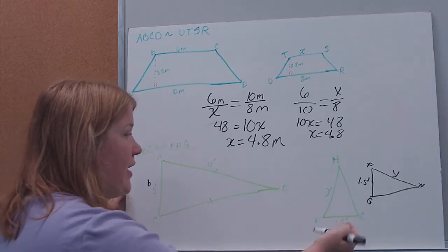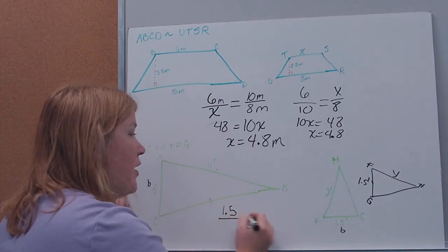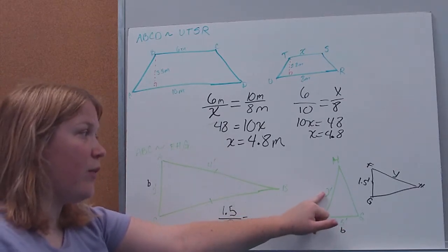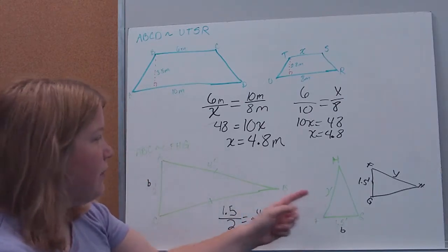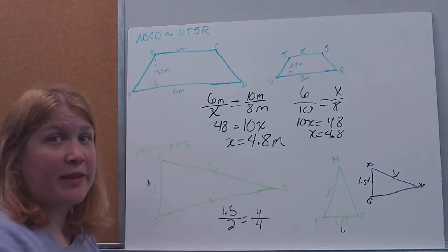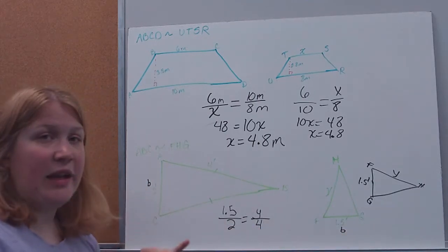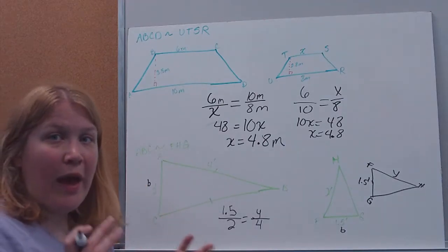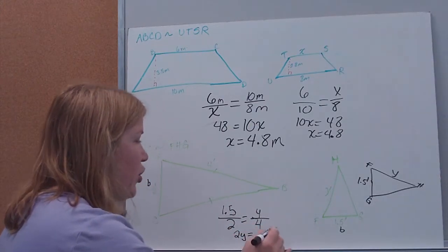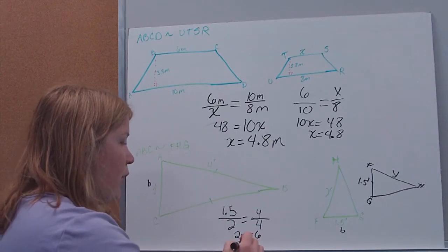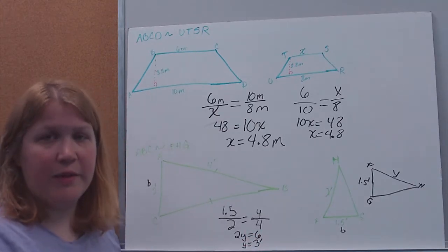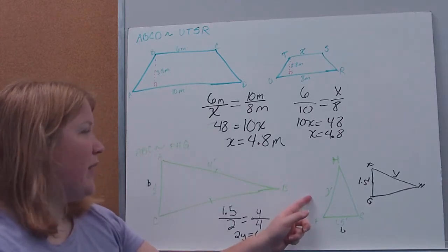So I'm going to set it up base to base, and I'm going to start with the little one just to be different: 1.5 to 2. I started with the little one, so I need to start with the little one again. My unknown is y; the corresponding side to y is 4. So I put the big one on the bottom because I put the big one on the bottom the first time. From here, cross multiplication gives me 2y equals 6. Dividing both sides by 2, y equals 3 feet.